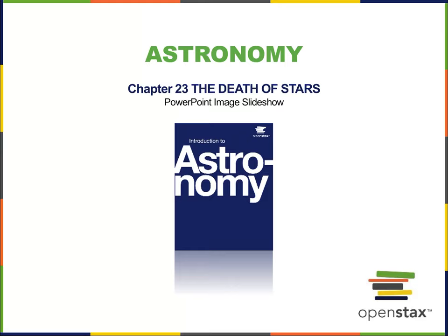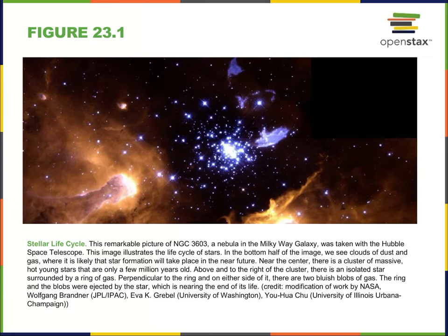Welcome to the lecture on Chapter 23, the death of stars. We've been leading up to this chapter by talking about the life cycle of stars, as illustrated in this Hubble telescope image of a section of the sky showing stars being born from a nebula, from a molecular cloud, stars burning in the main sequence. And here we have a picture of a star actually shedding huge amounts of mass as it dies, as it reaches its final stage. This focuses on the life cycle of high-mass stars, burning bright and blue with their short life cycles.